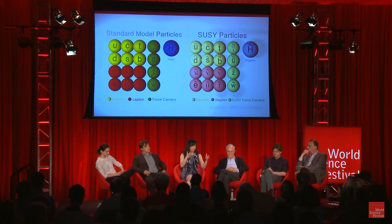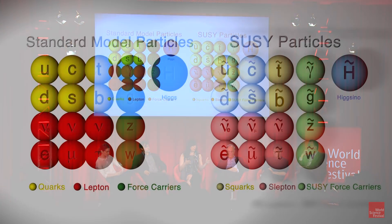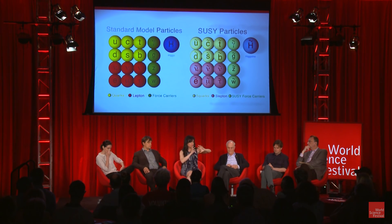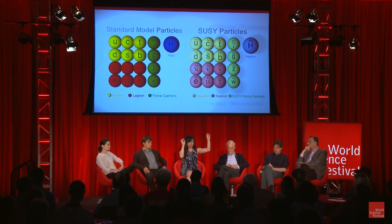So if the dark matter particle — whether it is supersymmetric or something else — is there, we have a very good chance to triangulate it among three experimental approaches: the indirect experiments in the sky, where dark matter annihilates with each other and produces different particles.